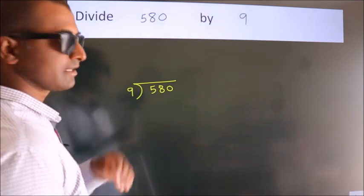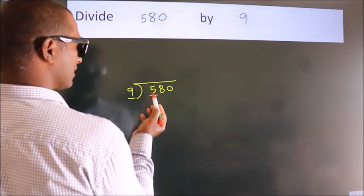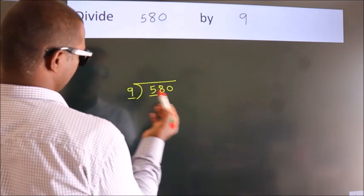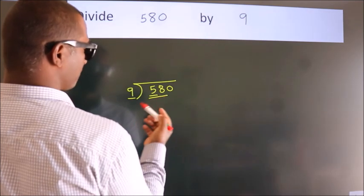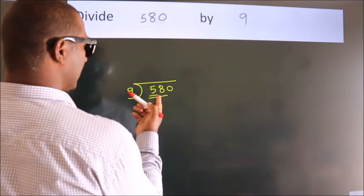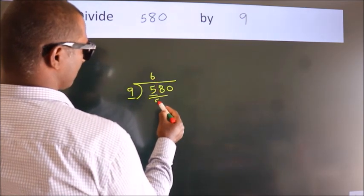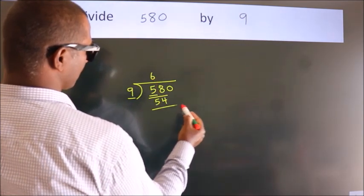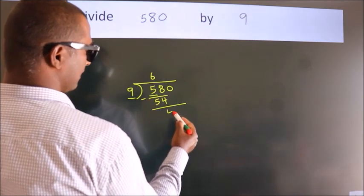Next, here we have 5, here 9. 5 is smaller than 9, so we should take two numbers, 58. A number close to 58 in the 9 table is 9 times 6 equals 54. Now we should subtract, we get 4.